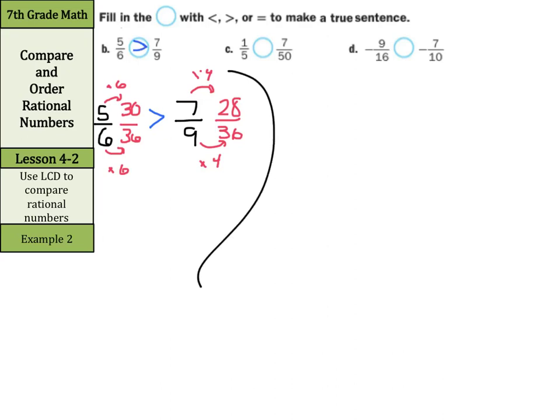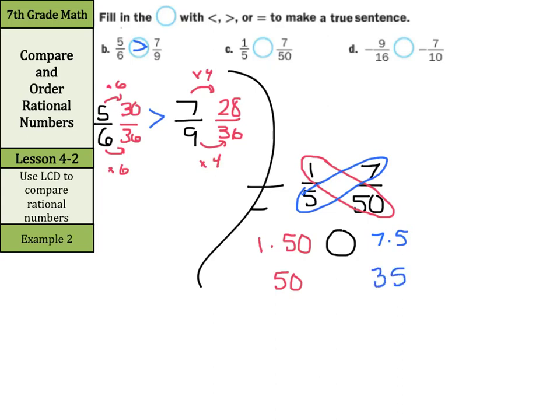For the next question, I'll use a slightly different method here. We have 1 fifths, and we're going to compare that to 7 fiftieths. There's this other way called the butterfly method. What we could do here is take our 1 times our 50, and that's on the left side. And we're going to compare that to 7 times 5. Our left side simplifies to 50, our right side simplifies to 35. And 50 is greater than 35, so 1 fifth is greater than 7 fiftieths.